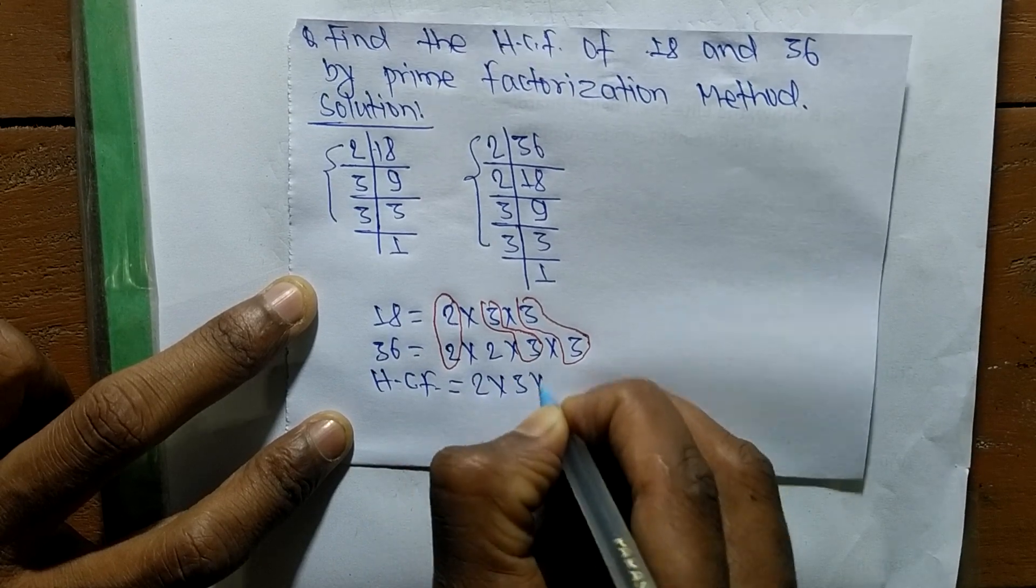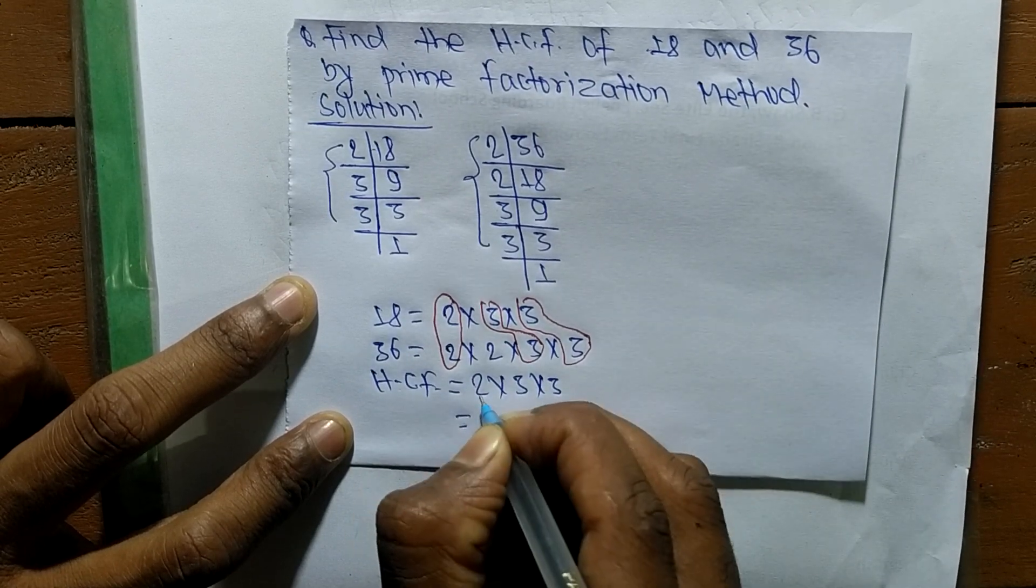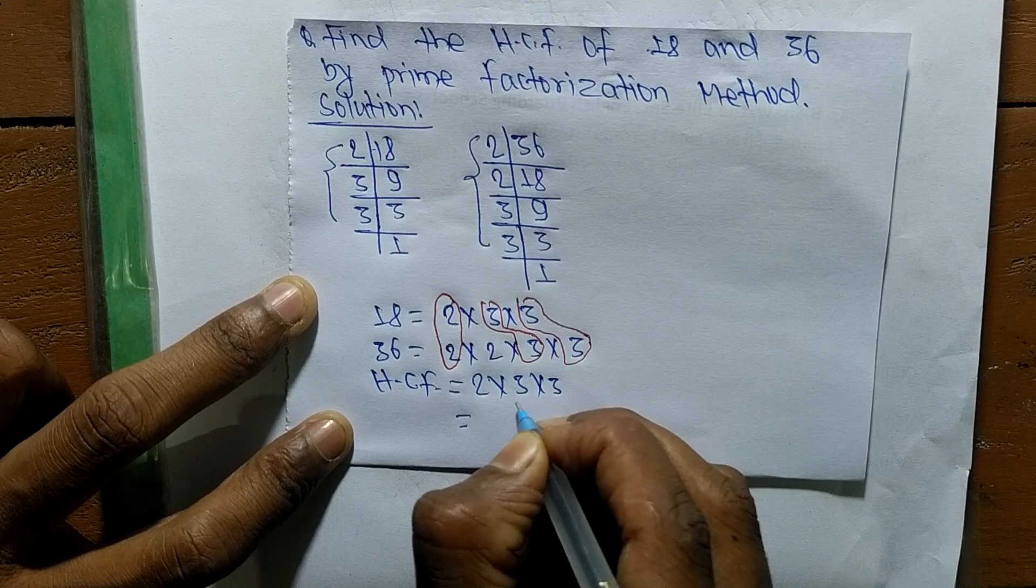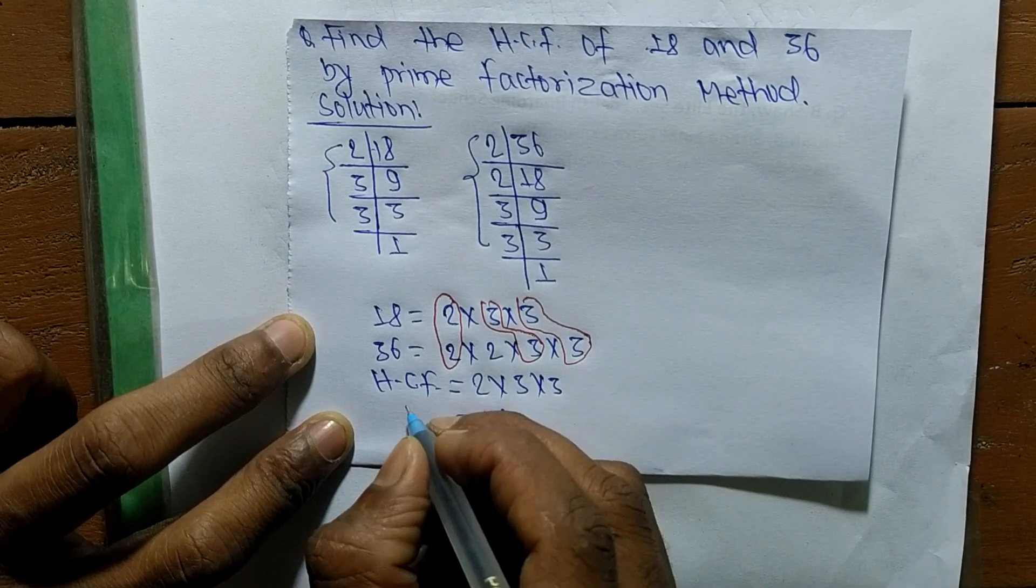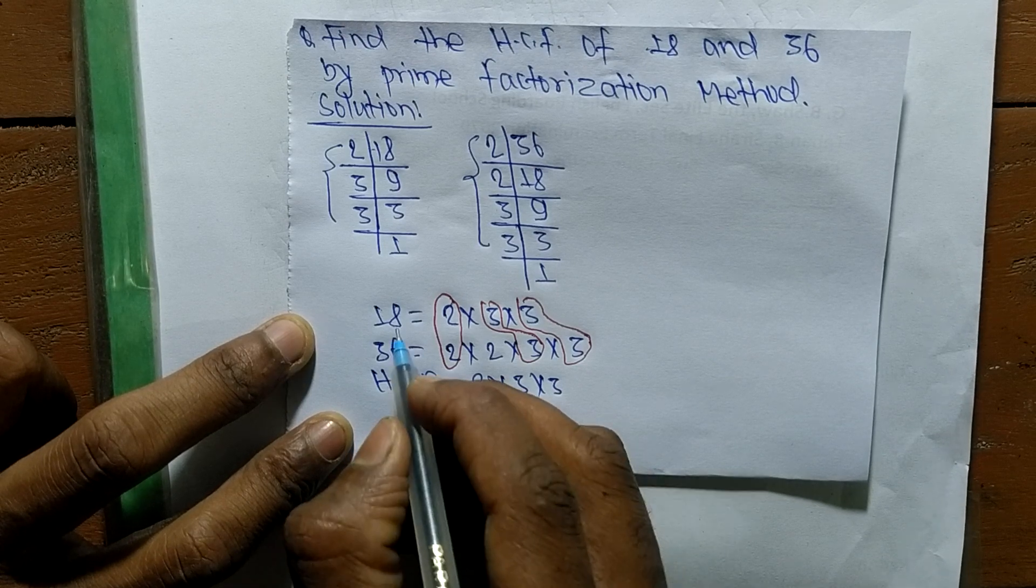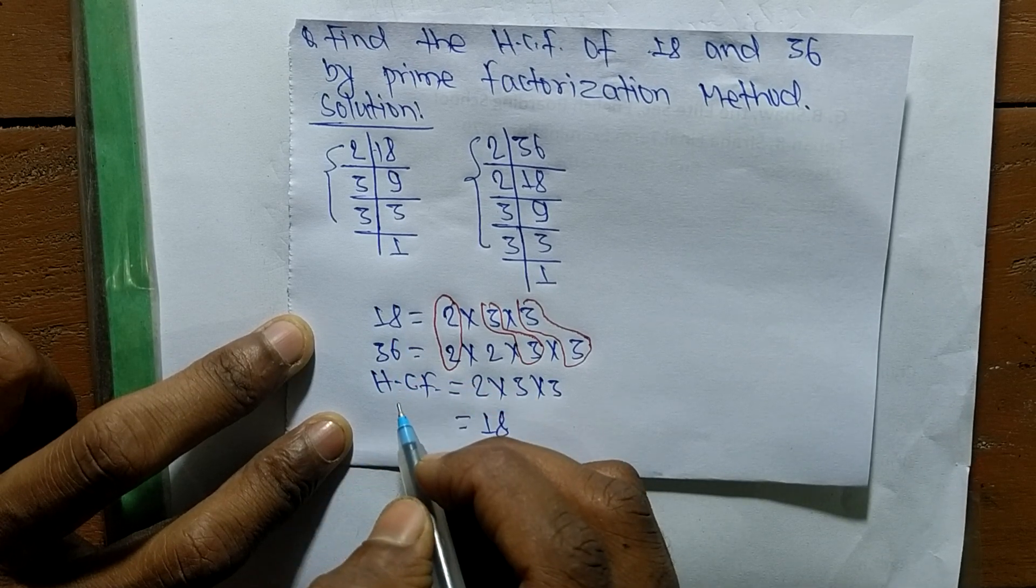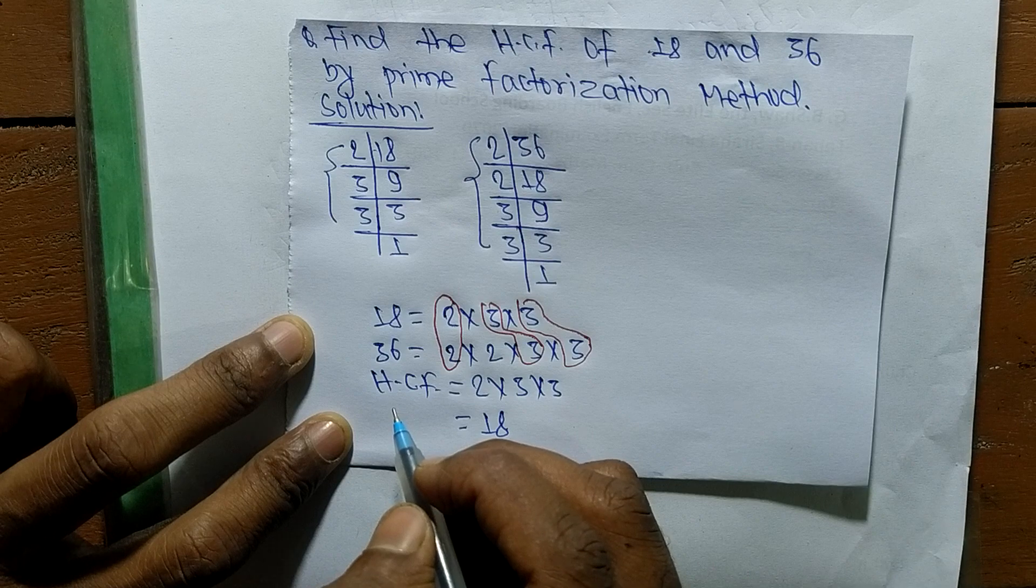So it is 2 times 3 means 6, and 6 times 3 means 18. So 18 is the highest common factor of 18 and 36. So this much for today and thanks for watching.